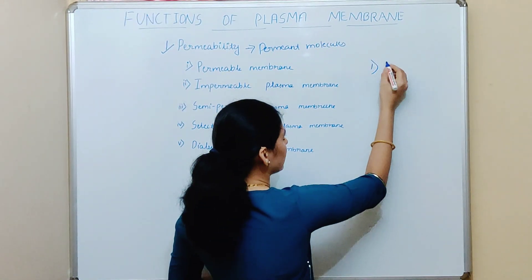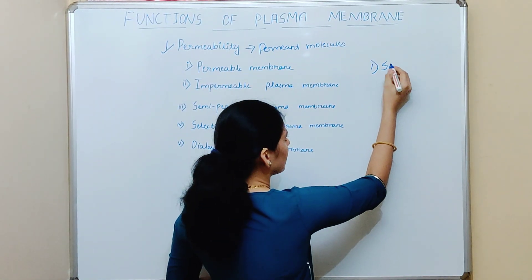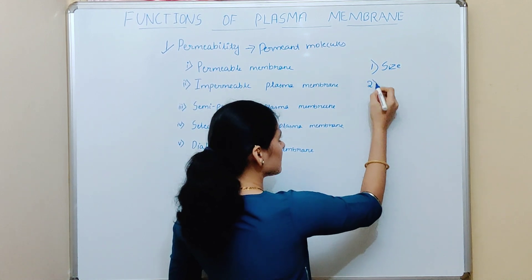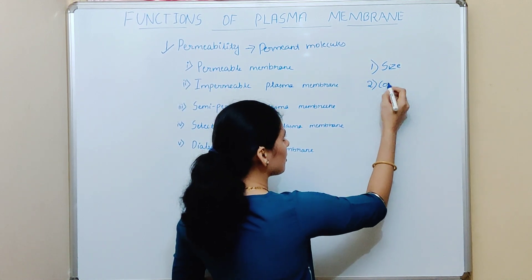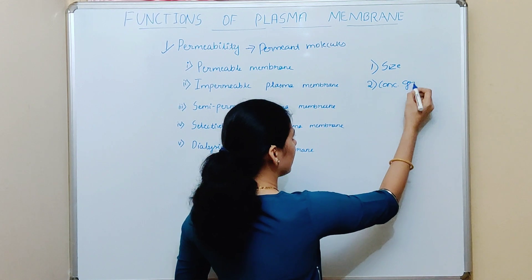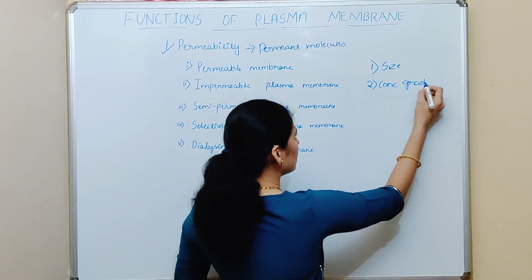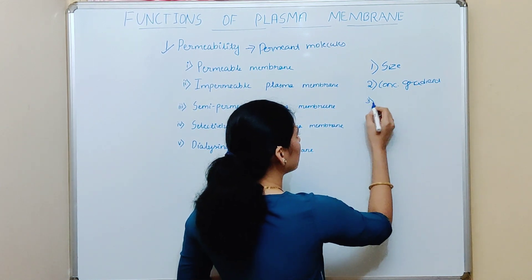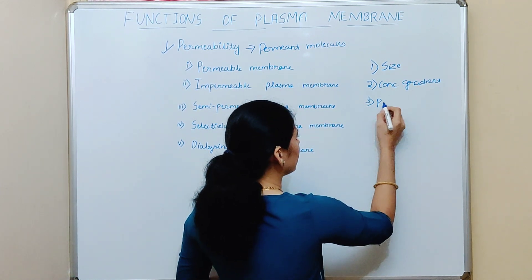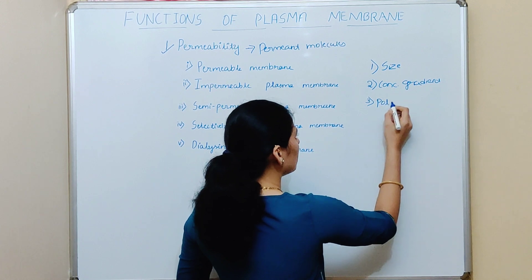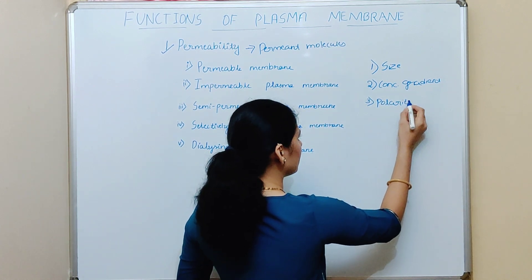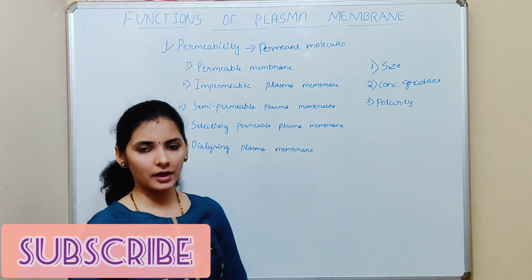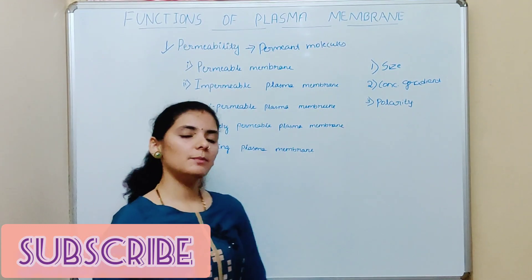The first factor is size — the size of the permeate molecule. The second one is concentration gradient — again of the permeate molecule. And the third one is polarity — the polarity of the permeate molecule. We'll discuss the meaning of all these three factors.